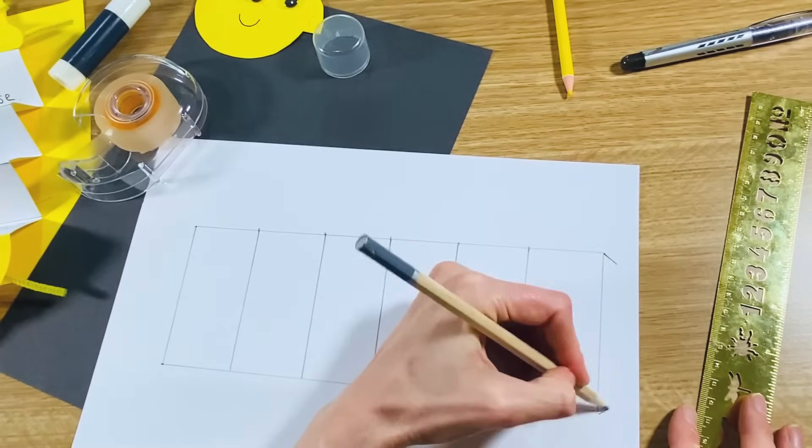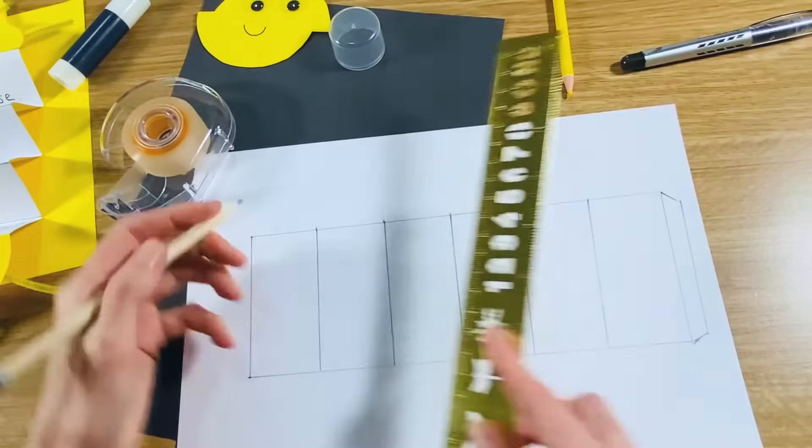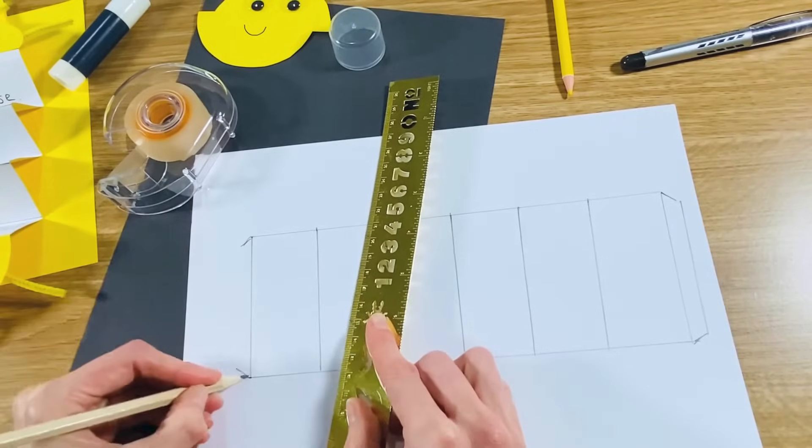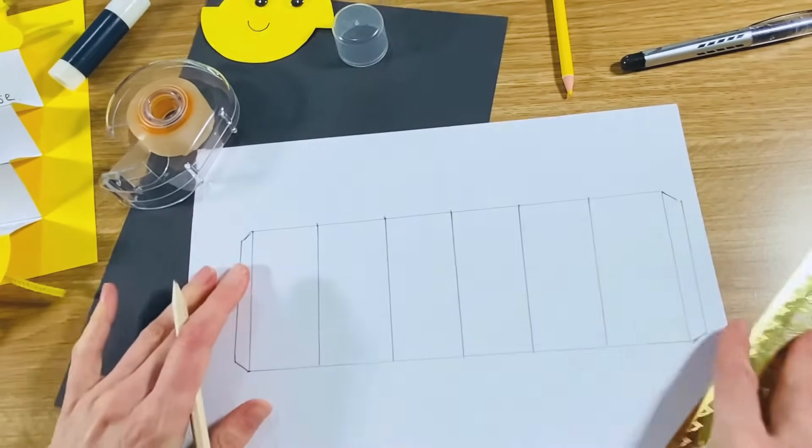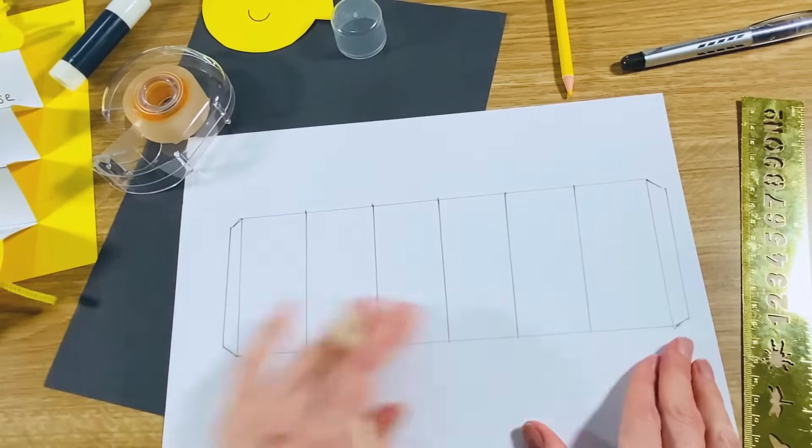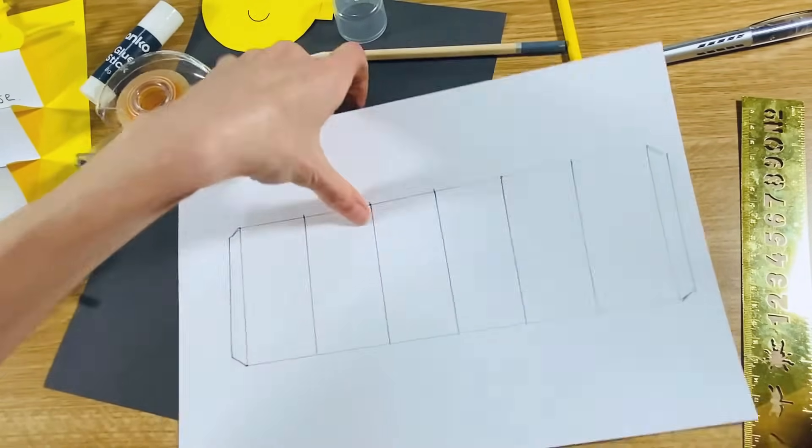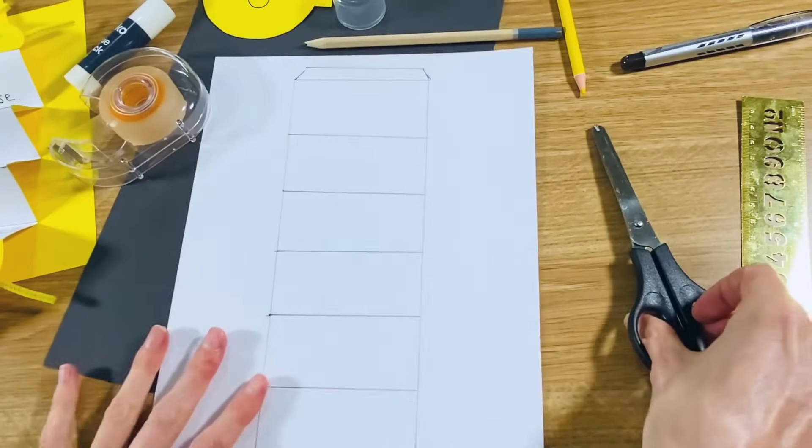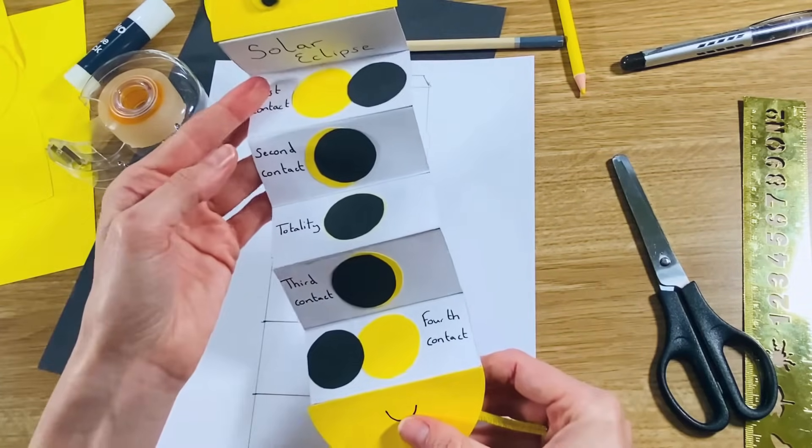Once you've done that, you'll also want to add just a little tab, it doesn't have to be neat on the top and bottom, because you'll need something to stick your sunshine halves on a little bit later. So you're going to have your six equal rectangles and then a tab on each side, and once you've got that it will be time to add our suns and moons in.